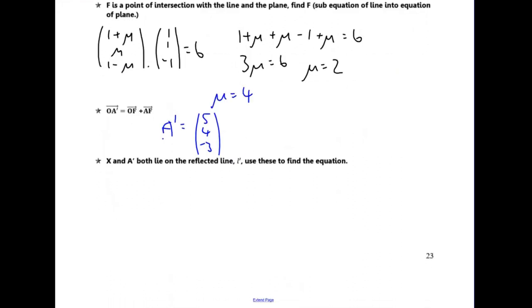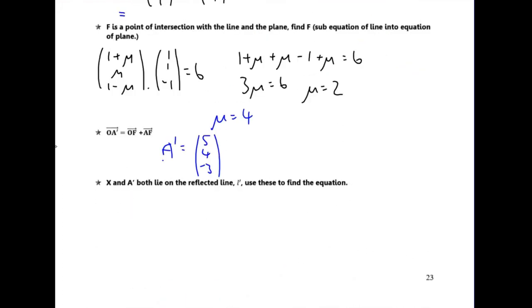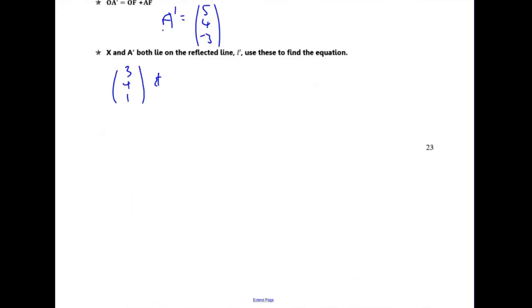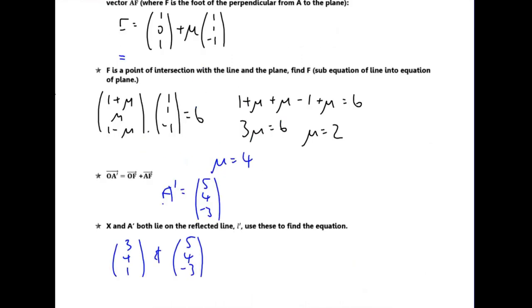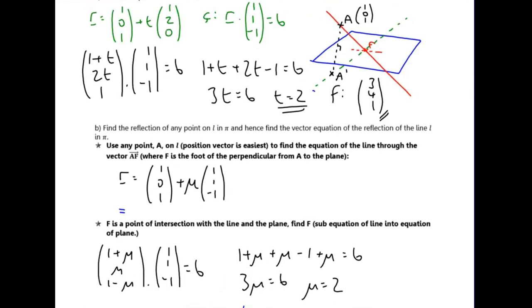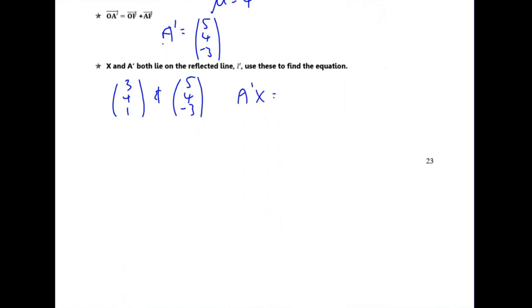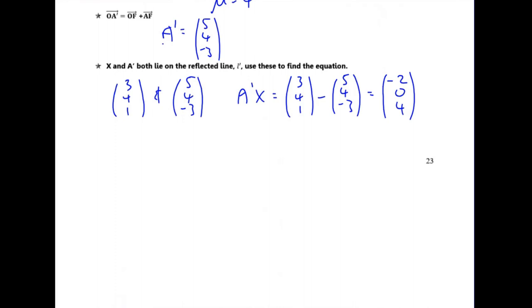Now I have two points the reflected line passes through: the intersection point F which is (3, 4, 1), and the reflected point A dash which is (5, 4, minus 3). I find the direction vector between them: (3, 4, 1) minus (5, 4, minus 3) = (minus 2, 0, 4). That's the direction vector. The equation of the reflected line L dash is r = (3, 4, 1) + s·(minus 2, 0, 4).